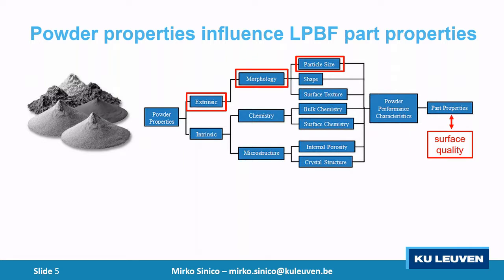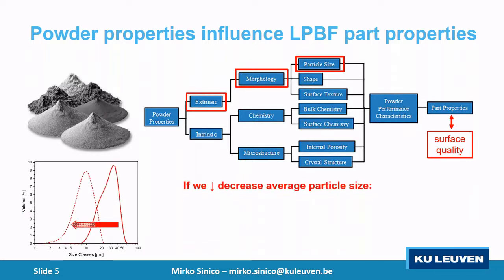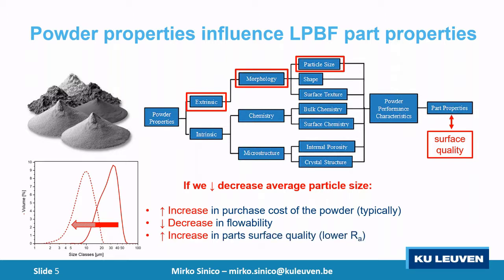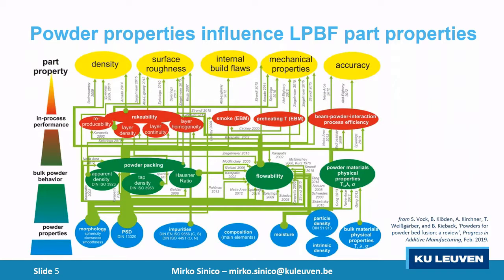From literature, very briefly: if we decrease the average particle size, we increase the purchase cost of the powder somewhat — depending on the distribution, supplier, and material. You decrease the flowability, which is critical because if the powder doesn't flow well, you may not be able to deposit it with your recoating system. But with quite good probability, on average you increase part surface quality, meaning you get lower surface roughness.